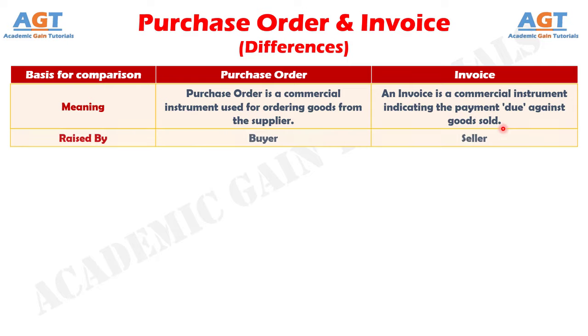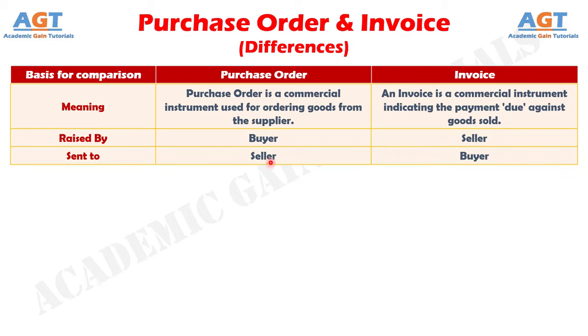Number 2: Purchase order is created by the buyer, whereas the seller creates an invoice. Number 3: Purchase order is issued to the seller, whereas invoice is issued to the buyer.